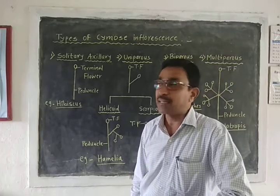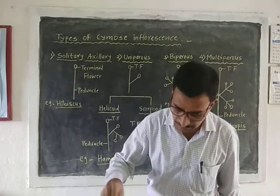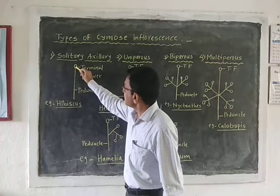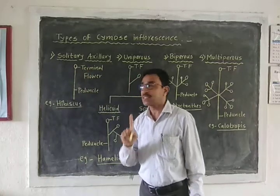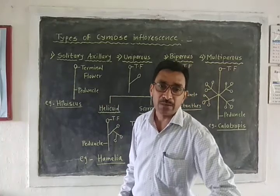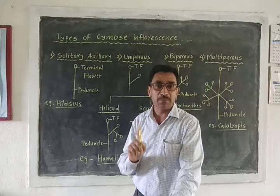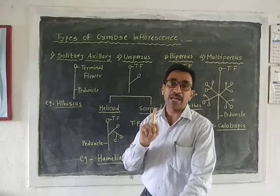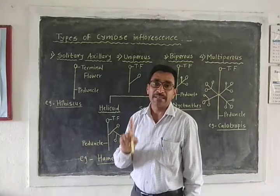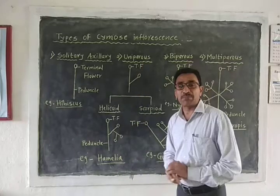First, we study the solitary axillary inflorescence. Here the peduncle — the main axis of inflorescence — bears a single terminal flower. When the peduncle bears a single terminal flower, that type of inflorescence is called solitary axillary inflorescence. Examples of solitary axillary inflorescence are Hibiscus, Rose, etc.